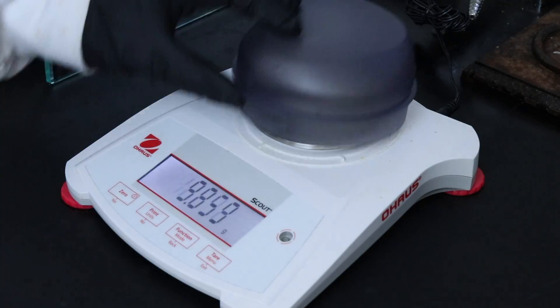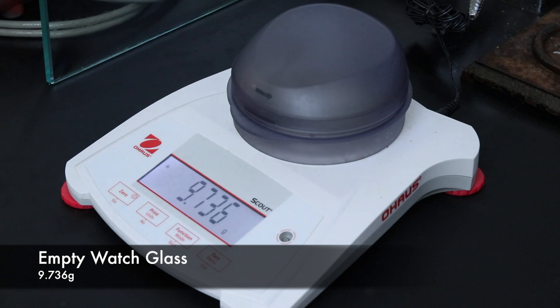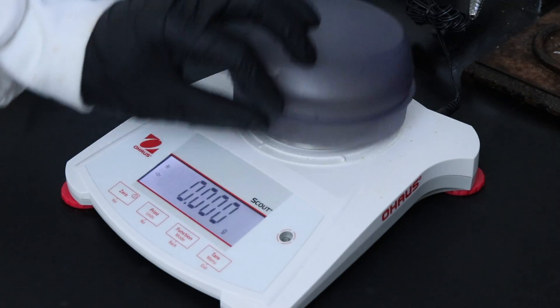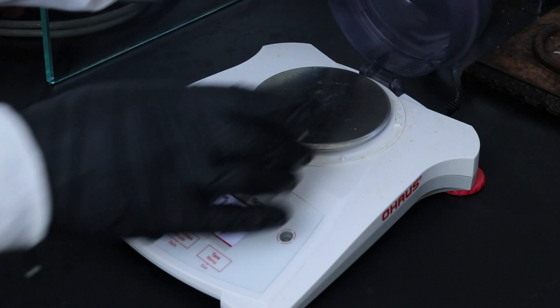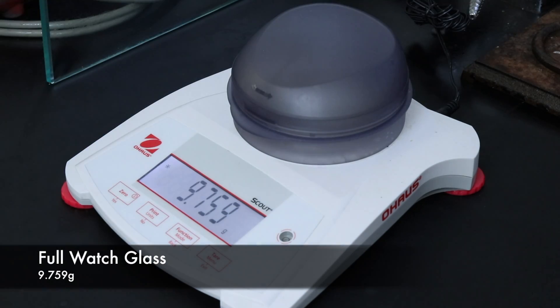Now I can weigh out the crystals to calculate a percent yield the empty watch glass being 9.736 grams and the full watch glass being 9.759 grams.